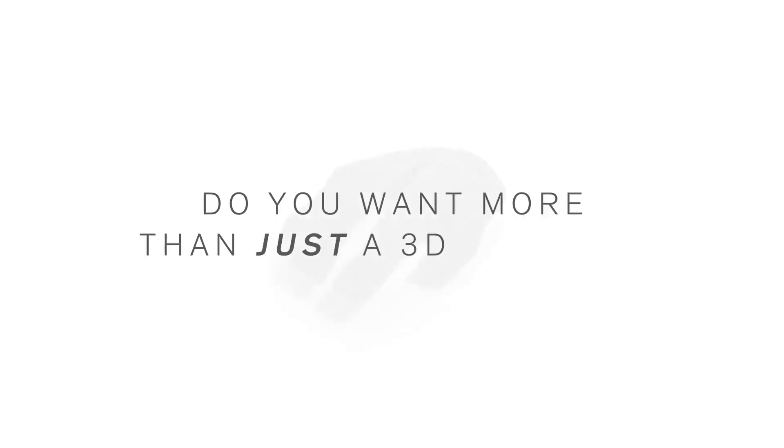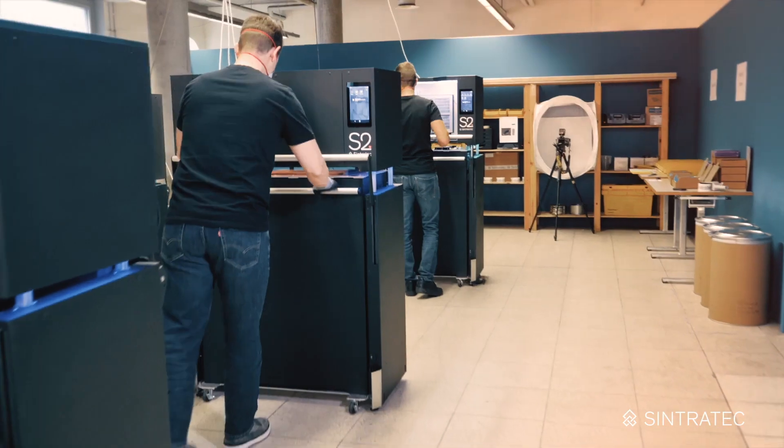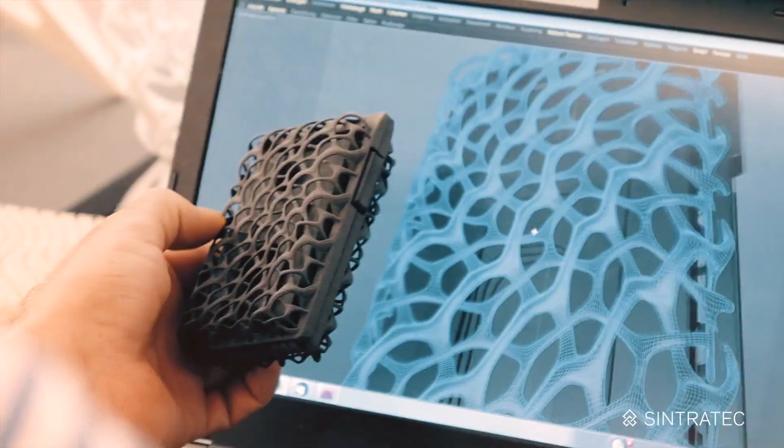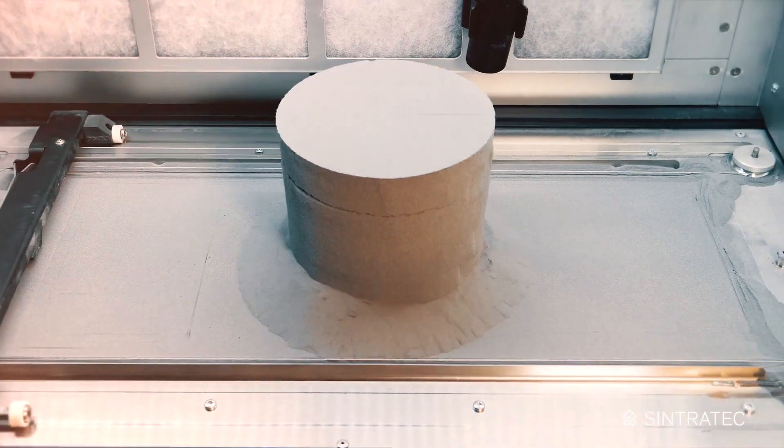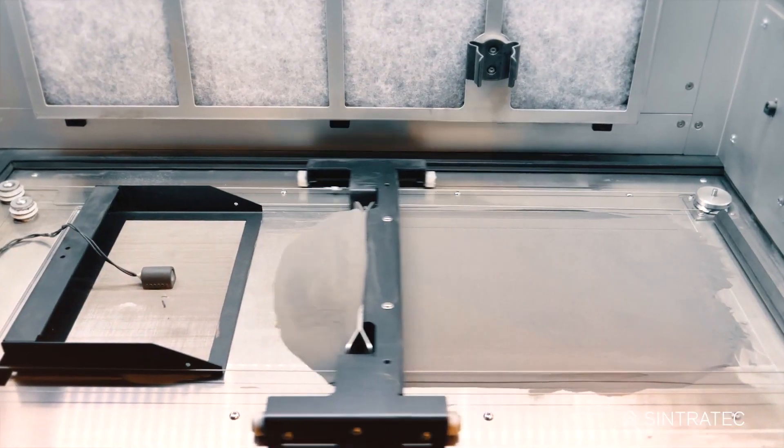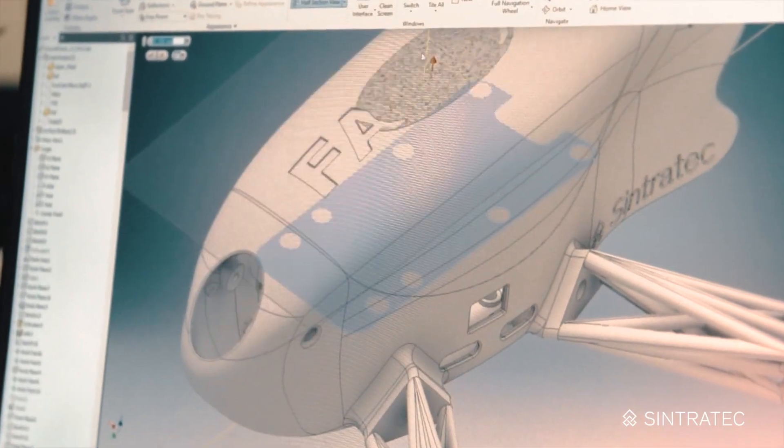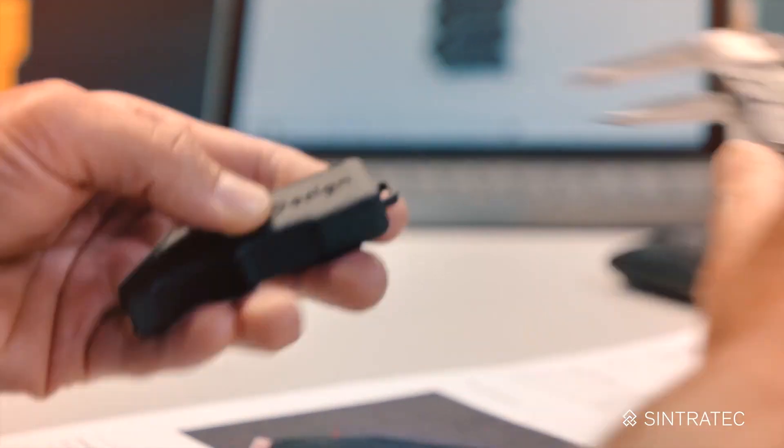Do you want more than just a 3D printer? The Sintratec S2 is a modular, scalable manufacturing platform with all the power selective laser sintering has to offer. Designed with complete freedom of form, 3D print with reduced downtimes, clean your parts efficiently, recycle your powder, and repeat. No idea's too crazy, no shape too complex, no project too bold. The future of manufacturing is here. Will you be part of it?